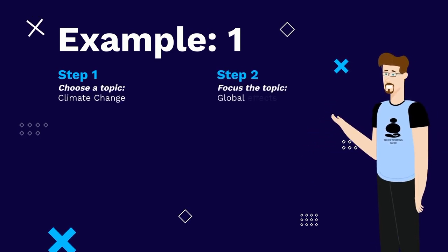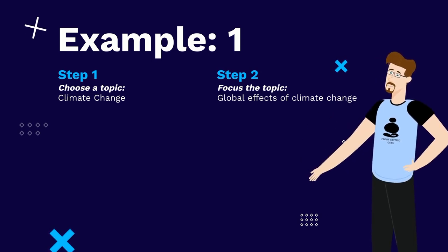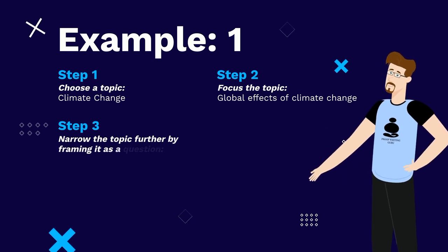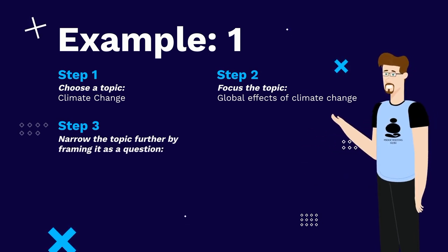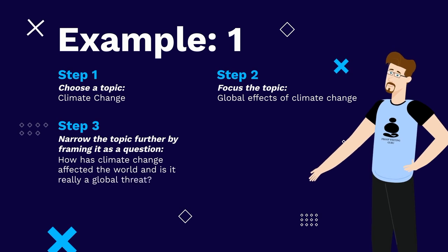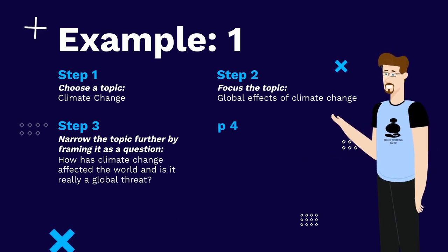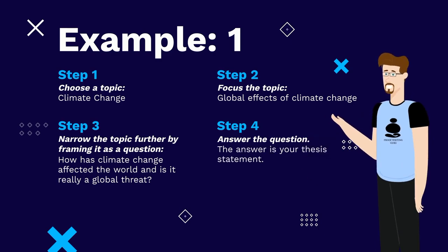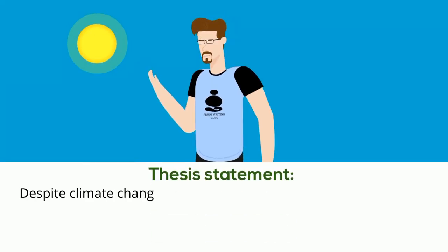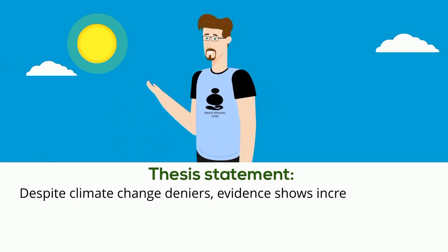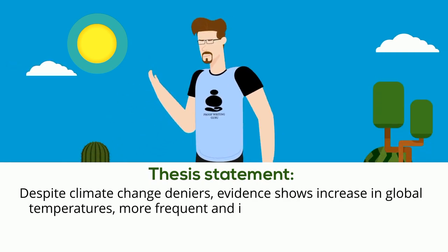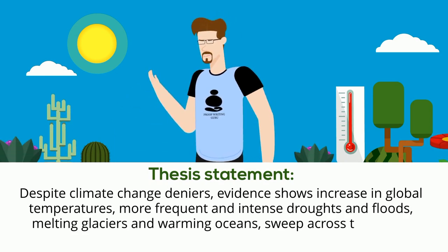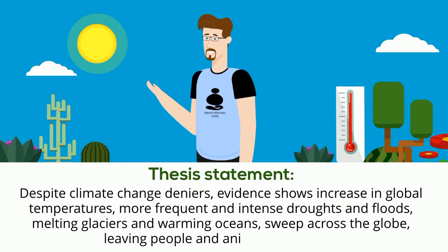Step two, focus the topic — global effects of climate change. Step three, narrow the topic further by framing it as a question: how has climate change affected the world and is it really a global threat? Step four, answer the question — the answer is your thesis statement. Thesis statement: despite climate change deniers, evidence shows increases in global temperatures, more frequent and intense droughts and floods, melting glaciers, and warming oceans sweeping across the globe, leaving people and animals vulnerable.